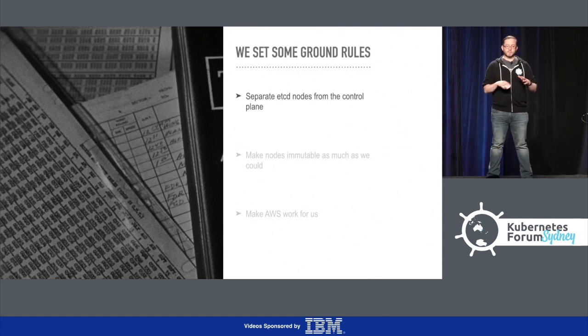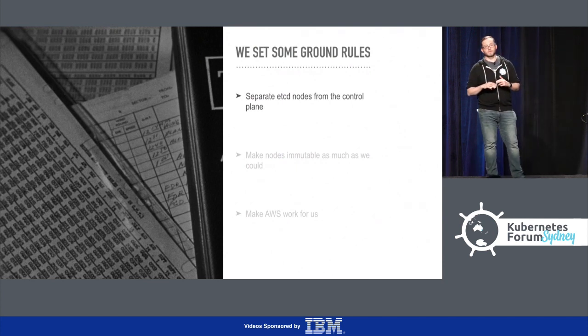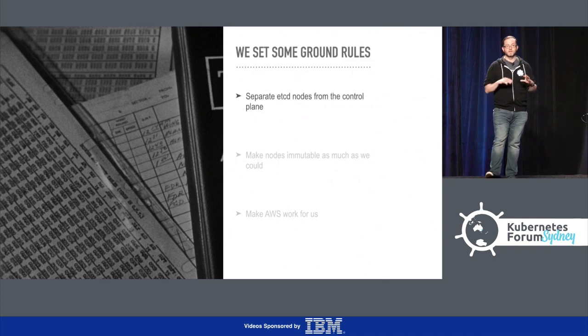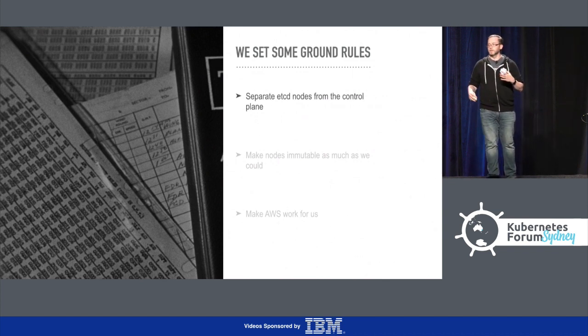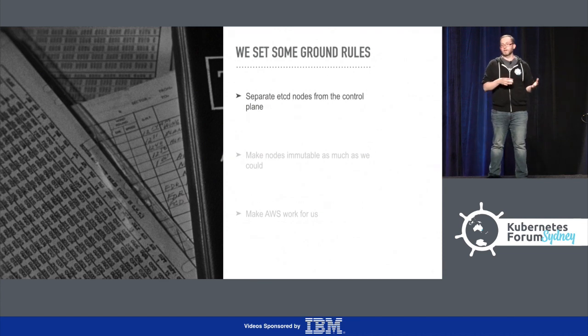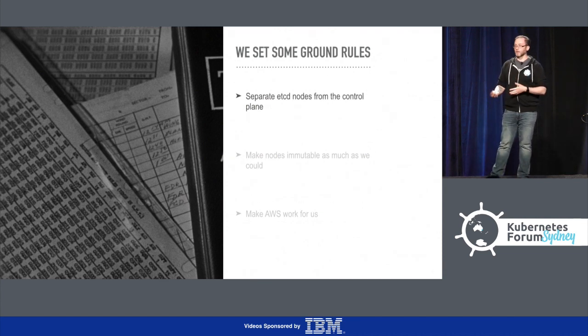So we set some ground rules at the time. Firstly, we wanted to have separate etcd nodes from the rest of the control plane because we were really worried about blast radius - if something goes wrong with one of them, we didn't want it to affect the other one.